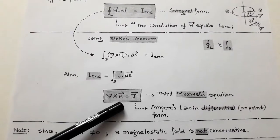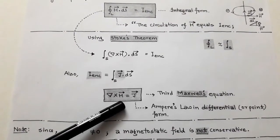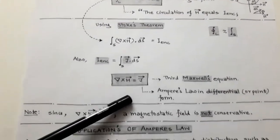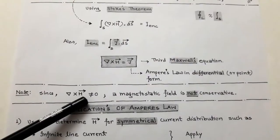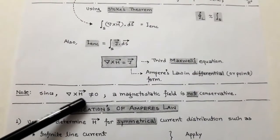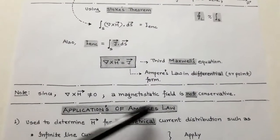Since the curl of H is not equal to zero — it equals J vector — then we can say that the magnetostatic field is not conservative.